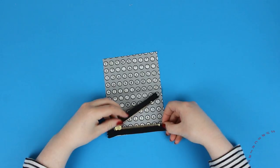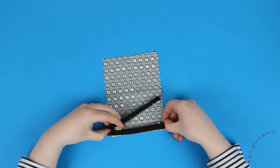Take your zip and align it with the marks you've just made and then pin it in place to secure it.